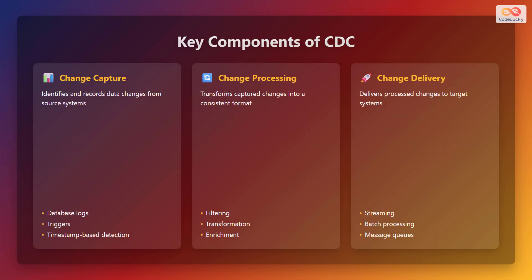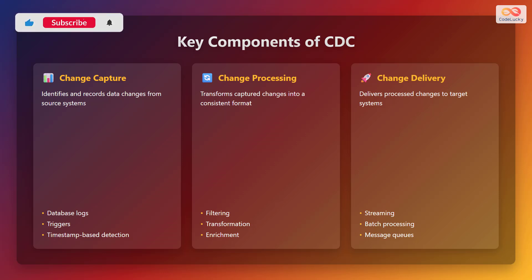Change data capture consists of three key components working together to capture, process, and deliver data changes. The first component is change capture. This component is responsible for identifying and recording data changes from the source systems. It employs methods such as reading database logs, using triggers, or timestamp-based detection to capture these changes.